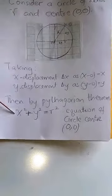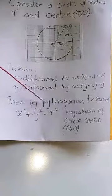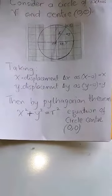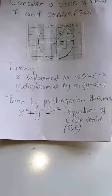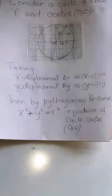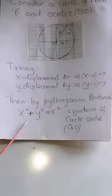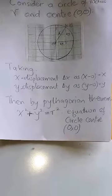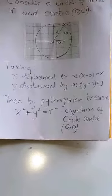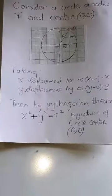Applying the Pythagorean theorem, we get x² + y² = r², where r is the radius of the circle and also the hypotenuse of the Pythagorean triangle. This equation x² + y² = r² is the equation of a circle whose center is (0, 0).